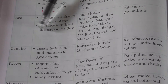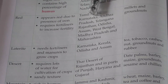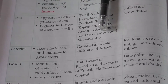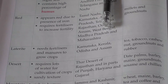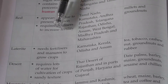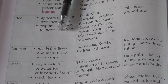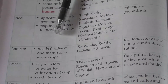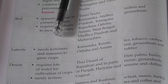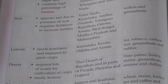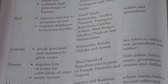The next type of soil is red soil. It is found in Tamil Nadu, Karnataka, Andhra Pradesh, Telangana, Rajasthan, Odisha, Assam, West Bengal, Madhya Pradesh, and Maharashtra. This soil is rich in iron, which gives it the red color. It is not very fertile, so farmers add fertilizers to make it suitable for agriculture. The crops grown in red soil are millets and groundnuts.